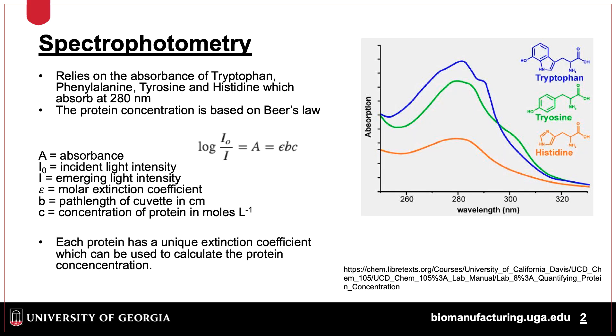The concentration of a protein can be determined using spectrophotometry. Most proteins have tryptophan, phenylalanine, tyrosine, and histidine, which absorb at 280 nanometers.